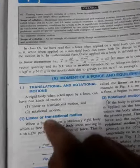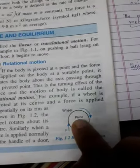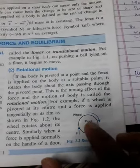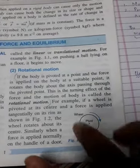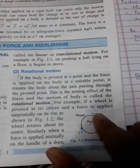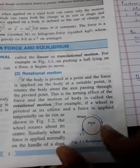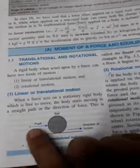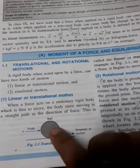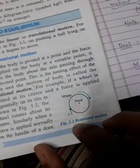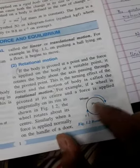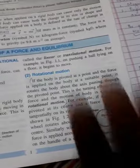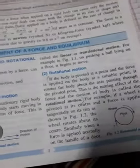That fixed point is usually called a pivot. Even though you are applying the force straight, the body will not move straight — since it is fixed at the center, it will go round and round. So even though you are applying the force straight, the body rotates. This is the turning effect of force, where the body is in rotational motion.